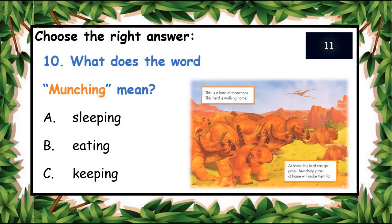The next question: what does the word 'munching' mean? A: Sleeping, B: Eating, C: Keeping. You have ten seconds to answer. B: Eating. Eating!